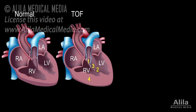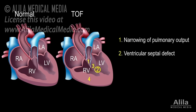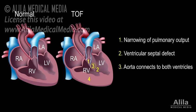Infants born with TOF are presented with four major structural defects: narrowing of the pulmonary output, ventricular septal defect — an opening in the interventricular septum, displacement of the aorta so that it now connects to both ventricles, and hypertrophy of the right ventricle.